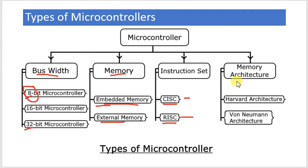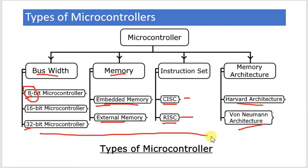We can also classify microcontrollers based on their architecture — how they are made or which architecture was used to develop the chip. There are mainly two types of architectures: Harvard architecture and Von Neumann architecture. We will study these in a separate video lecture. These are the main parameters for classification. Other parameters include on-chip memory size, available peripherals, number of pins, and execution speed.